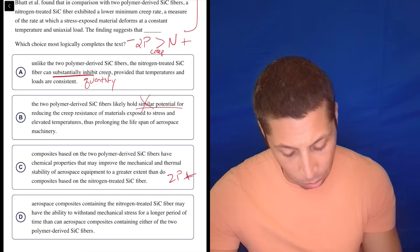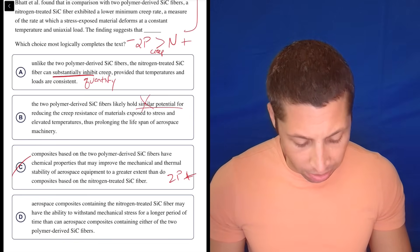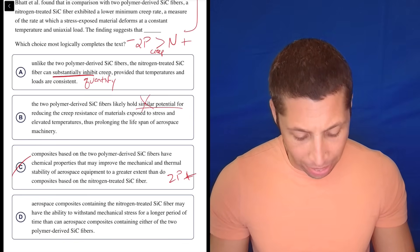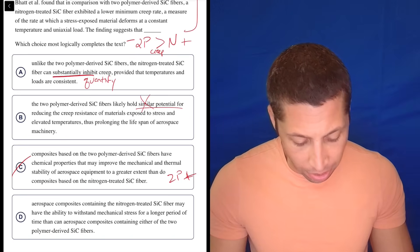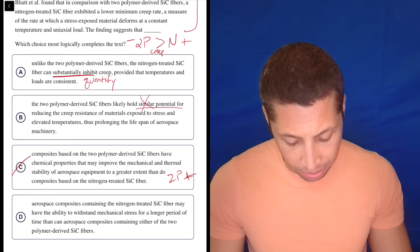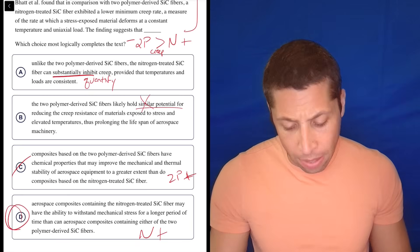D: Aerospace composites containing the nitrogen-treated SiC fiber may have the ability to withstand mechanical stress for a longer period of time than can aerospace composites containing either of the two polymer-derived SiC fibers. Yeah, this is saying the nitrogen one is better. Done. This is easy.